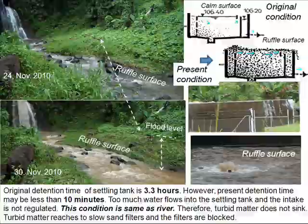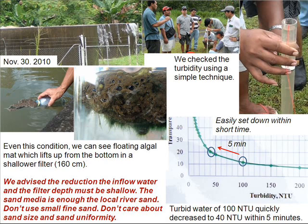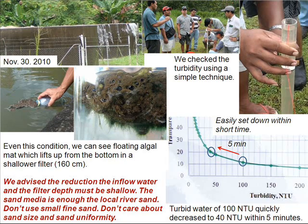After the flooding, they did not control the inflow. We checked the turbidity using a simple technique — just transparency. Turbid water of 100 NTU quickly decreased to 40 NTU within 5 minutes. Even under this condition, we can see floating algal mat lifting up from the bottom in the shallow filter.